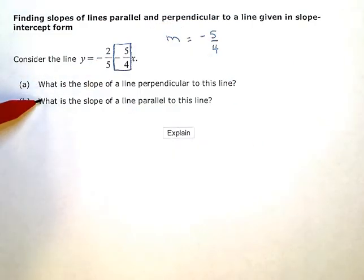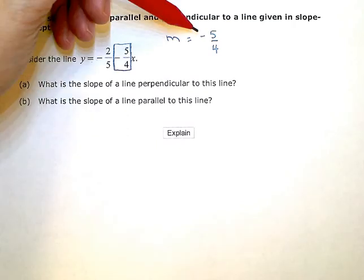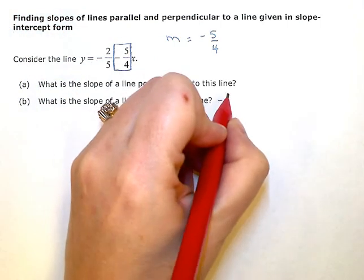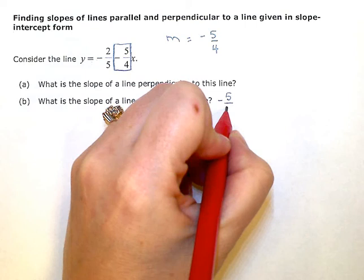Parallel lines. I'm going to do this one first. Parallel lines have the same slope. So if the slope of this line is negative 5 fourths, any line parallel will also have a slope of negative 5 fourths.